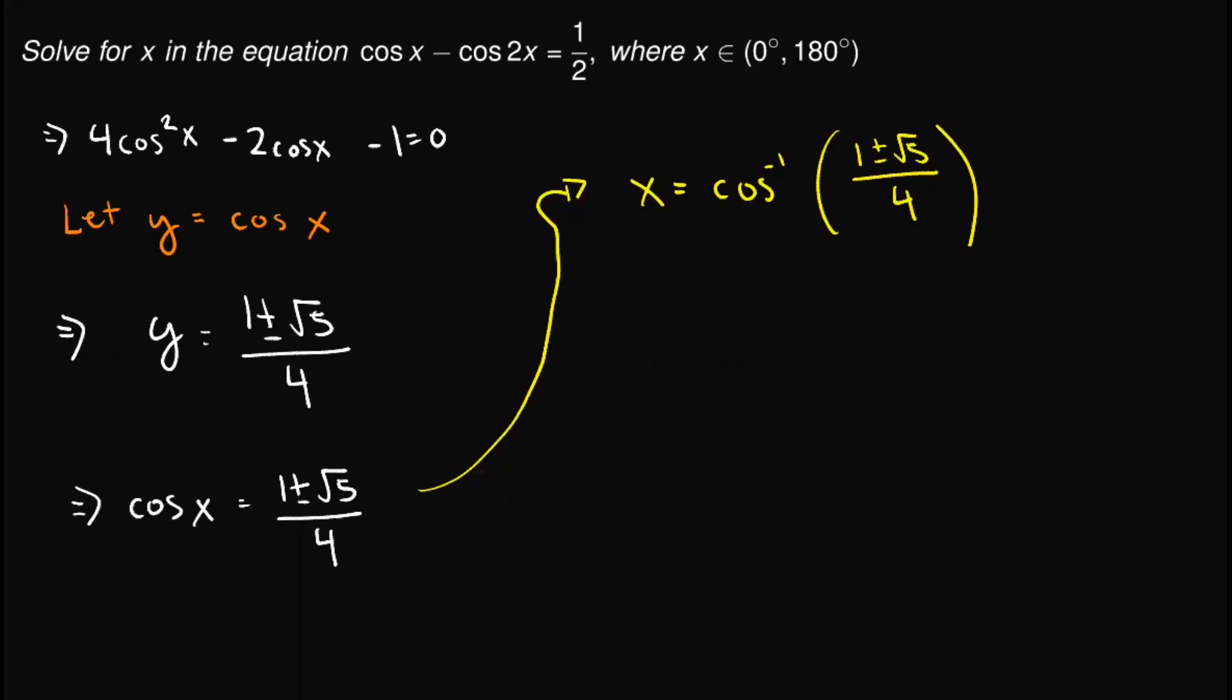1 plus square root of 5 over 4, as well as the cosine inverse of 1 minus square root of 5 over 4. And you can verify that the first is equal to 36 degrees, and this next one is equal to 108 degrees.